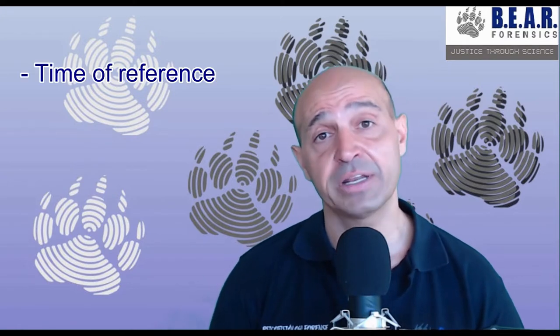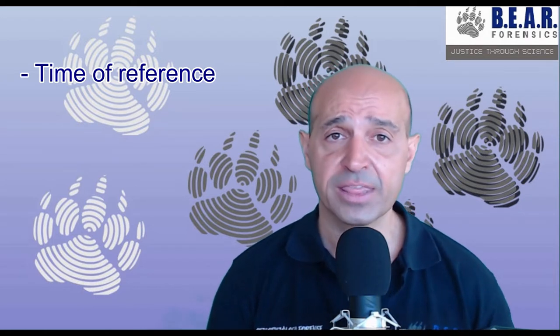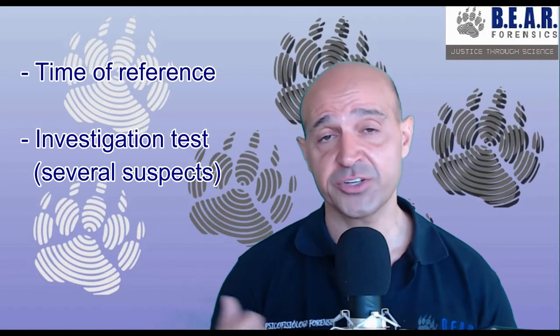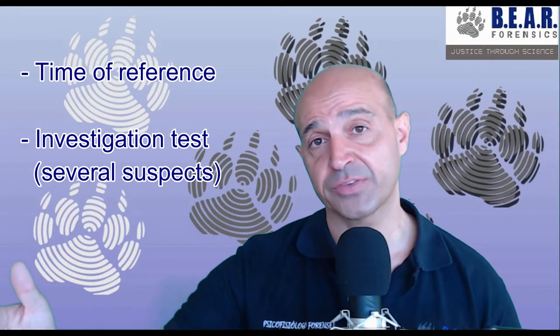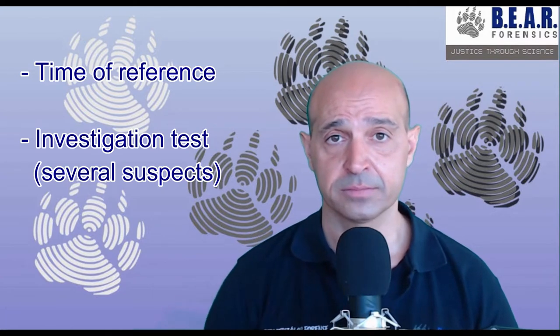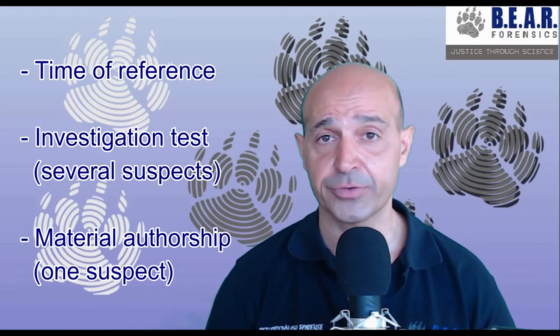Explain the situation to the polygraph examiner and they will know what test and technique to use. In summary, the variables to consider are: number one, time of reference — single theft or recurring thefts over time; number two, is it an investigation test with several suspects to determine degree of involvement; and number three, is there one suspect and we want to know if that person is the perpetrator.